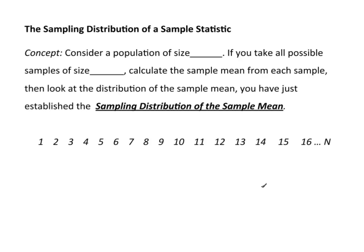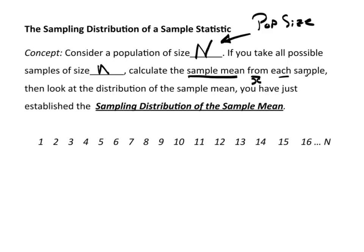Let's start discussing the idea of a sampling distribution of the sample statistic. Suppose we have a population of size N — capital N represents the population size. If you take all samples of size n (lowercase n is the sample size) and calculate the sample mean, x-bar, from each sample, then if you look at the distribution of all those sample means you've just calculated, you've established the sampling distribution of the sample mean.